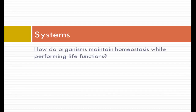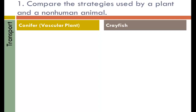The first questions are about systems. Compare the strategies used by a plant and a non-human animal. There were several choices: digestion, excretion, movement, transport, gas exchange, reproduction, or control. I picked transport and I'm going to compare a vascular plant and a crayfish.